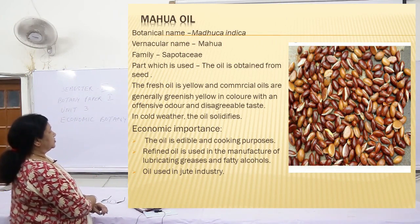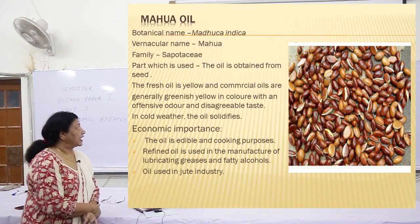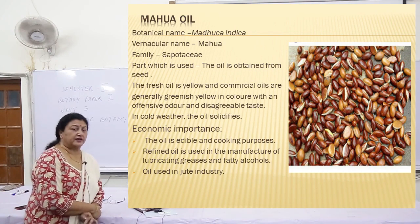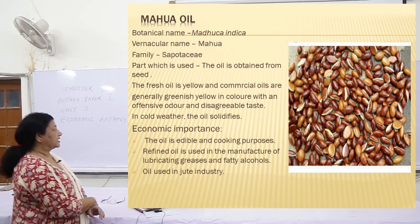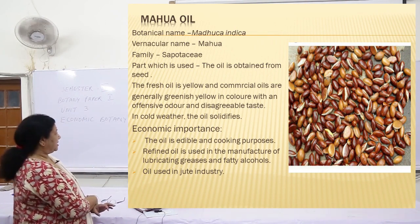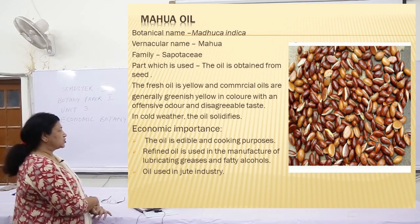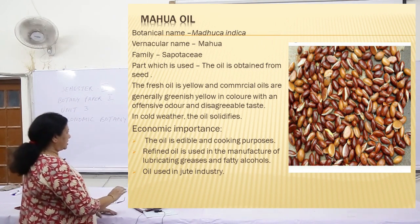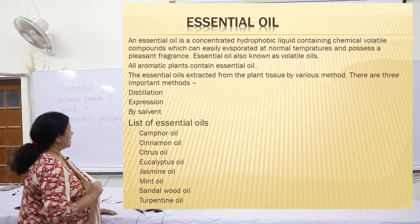Next is mahua oil. Botanical name: Madhuca indica. Vernacular name: mahua. Family: Sapotaceae. The oil is obtained from the seeds. The fresh oil is yellow in colour; the commercial oil is greenish-yellow with an offensive odour and a very disagreeable taste. In cold weather, the oil solidifies. Economic importance: the oil is edible and used for cooking purposes. Refined oil is used in the manufacture of lubricating greases and fatty alcohols. Oil is also used in the jute industry.